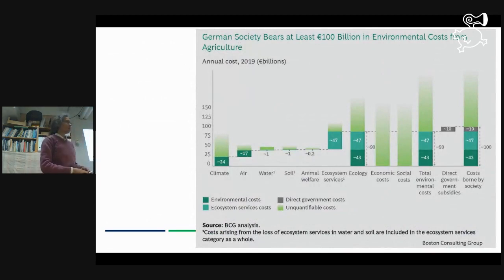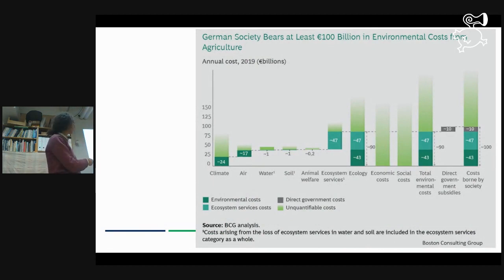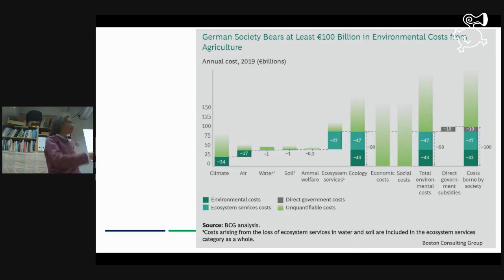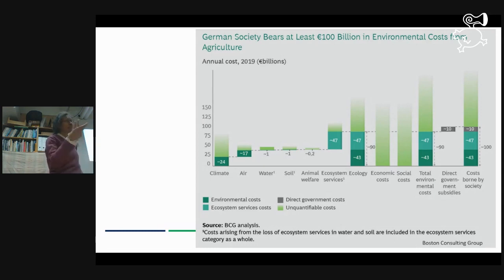That was quite an old study, but here is a new one by an American consultancy firm for Germany, and the calculations they made are quite staggering. It's not 2 billion anymore — it's 100 billion for food production. This is an unaccountable cost that societies pay in terms of pollution, climate change, loss of biodiversity, animal welfare. And in black, this is subsidies. So the actual cost to society is immense — food doesn't come cheaply.